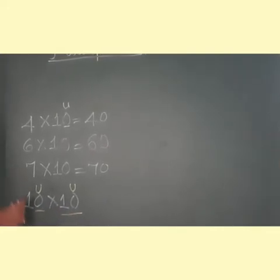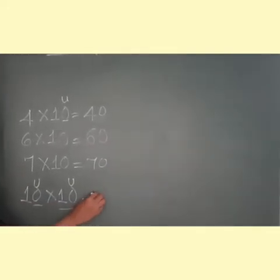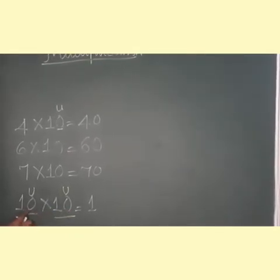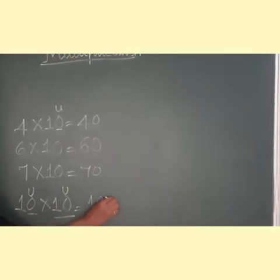So what are you going to say? 1 once is 1 and how many 0's are there? 2 zeros. So just add 2 zeros here.